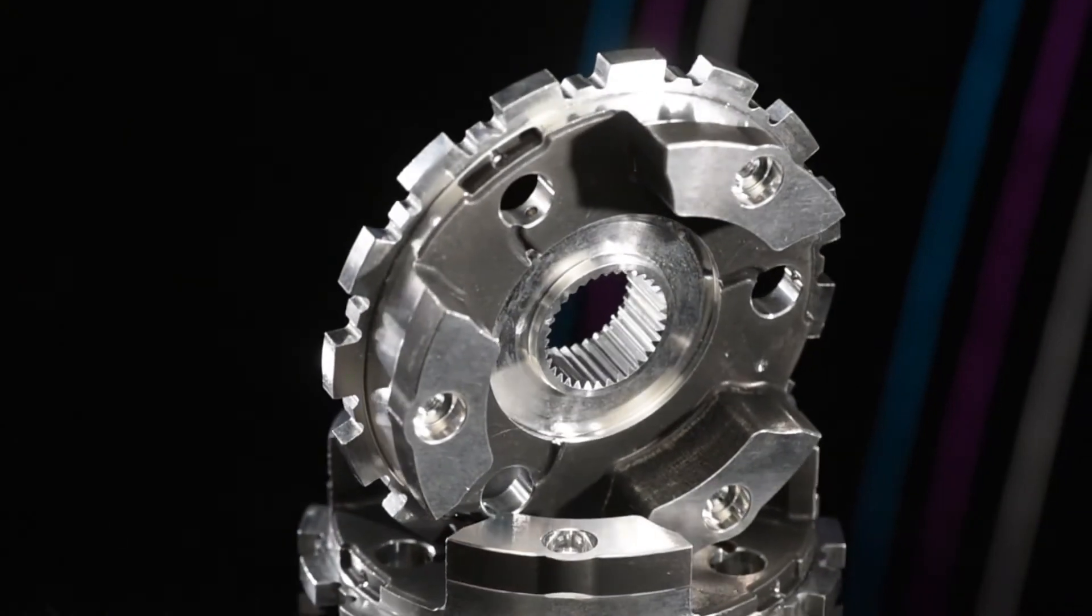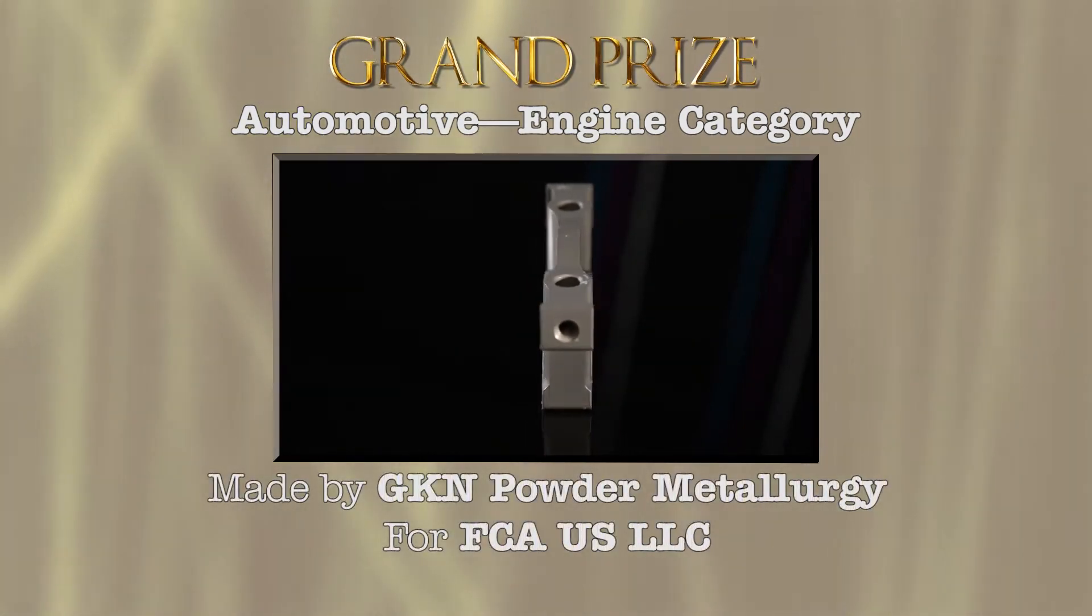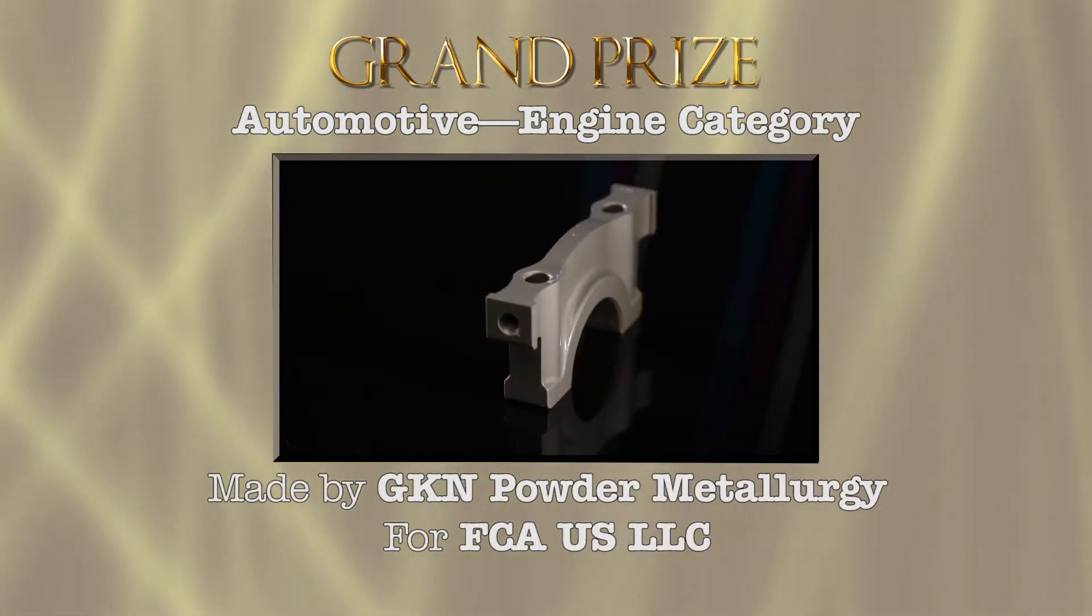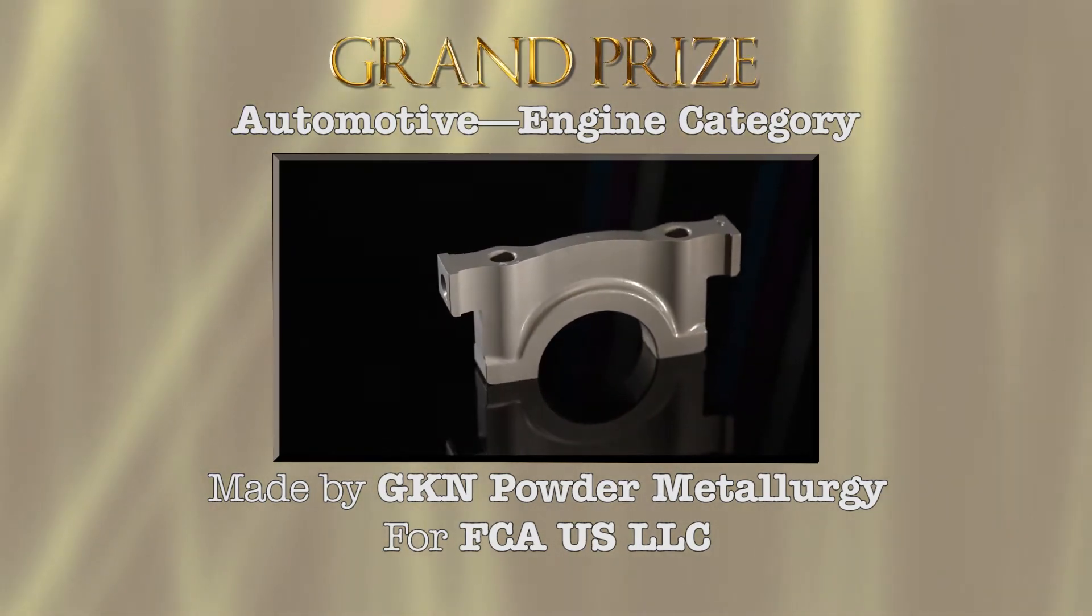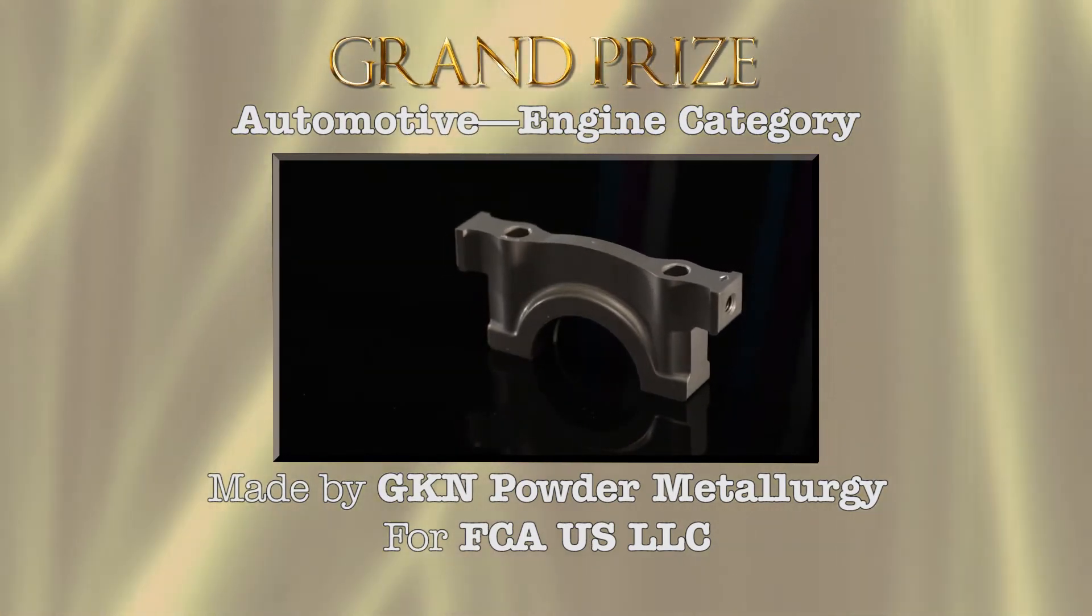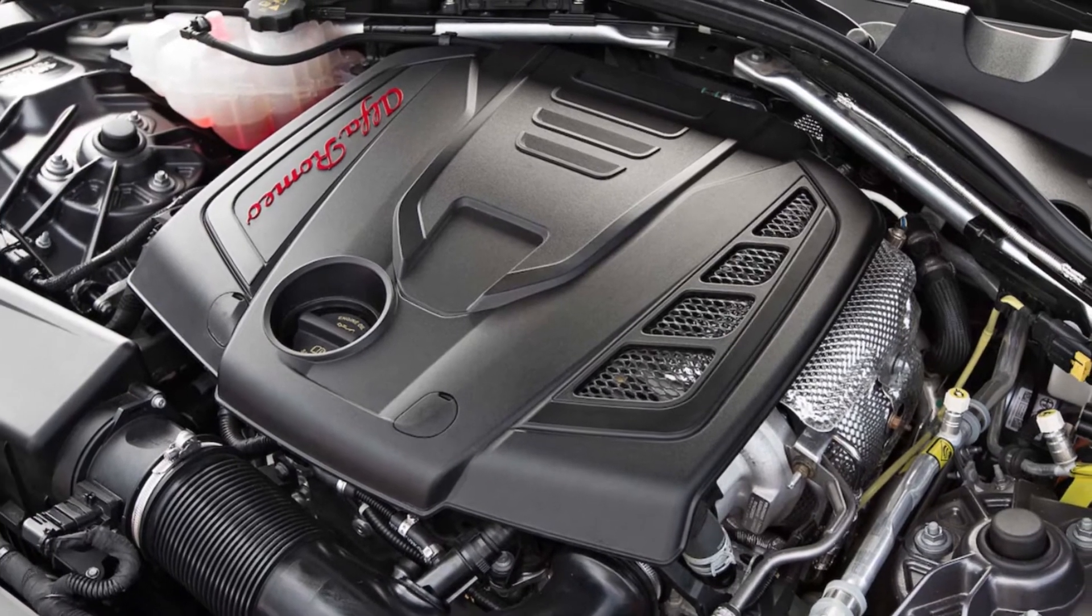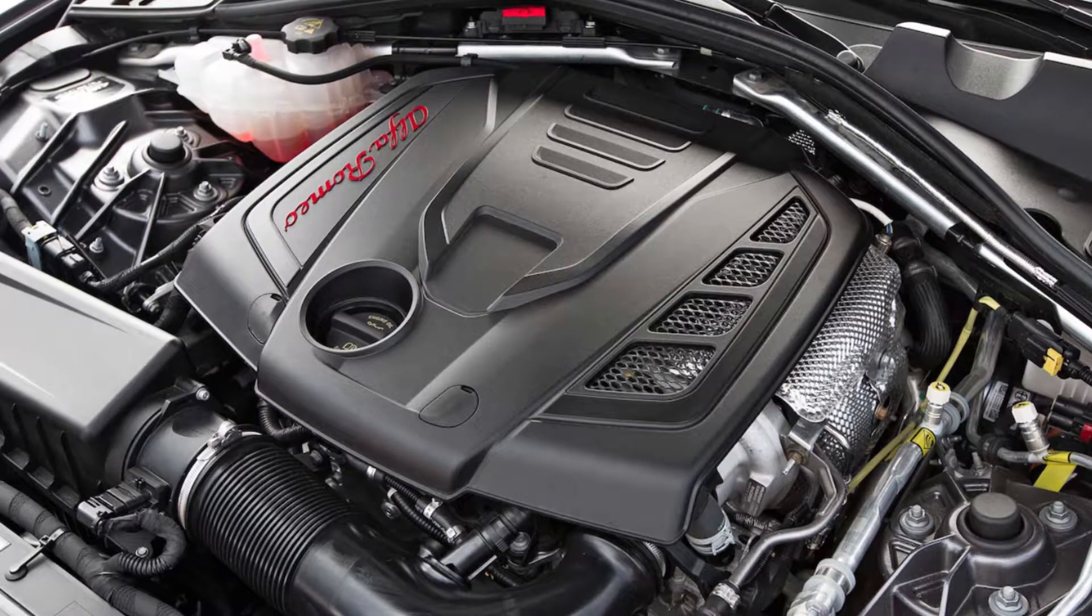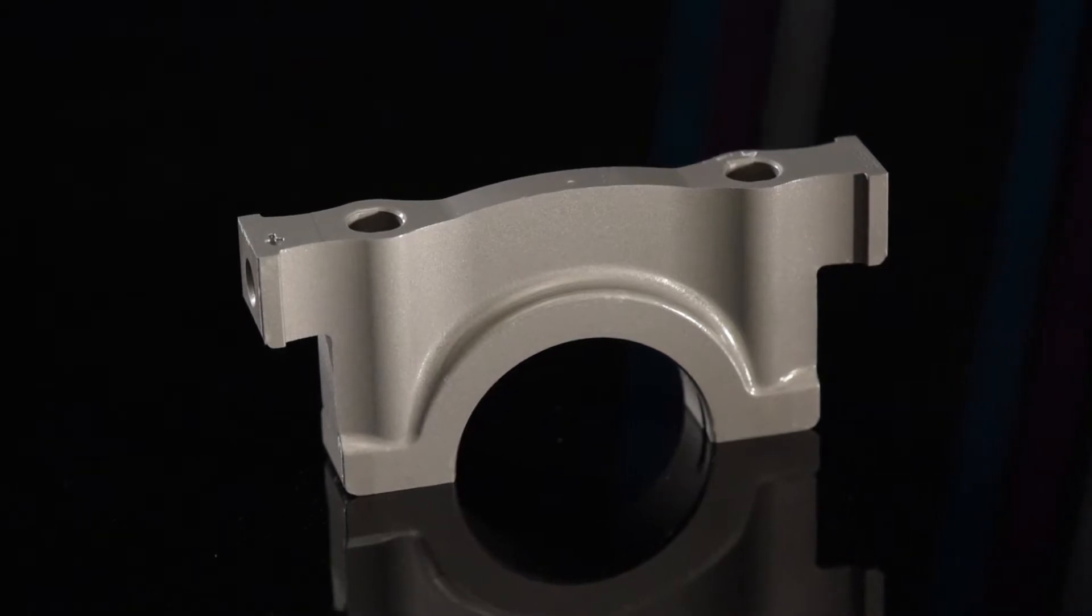The grand prize in the automotive engine category goes to GKN Powder Metallurgy for a copper steel main bearing cap made for FCA US LLC. Made of a modified FCO-205 material, the part is used in the 2.0 liter all-aluminum turbocharged four-cylinder FCA engine launched in the Alfa Romeo Giulia.